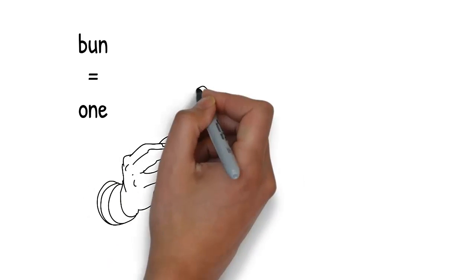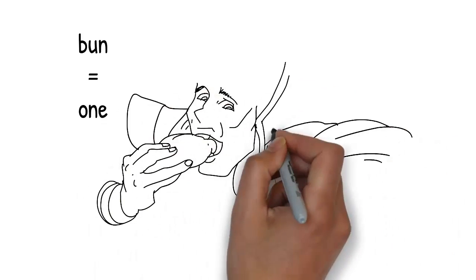It's time for Thor to have a snack, and he pulls out a golden bun to eat. Bun rhymes with 1.